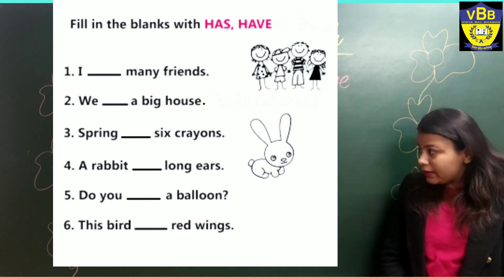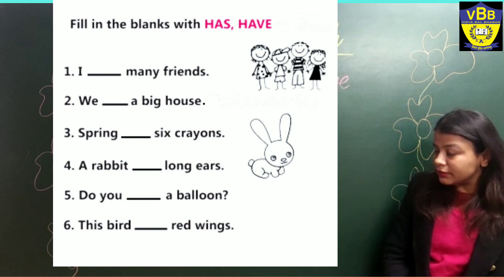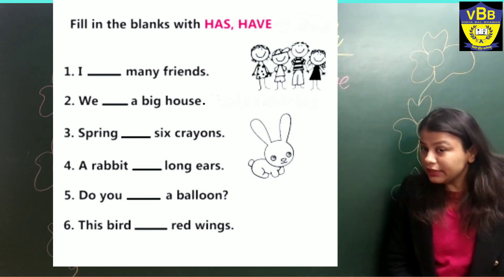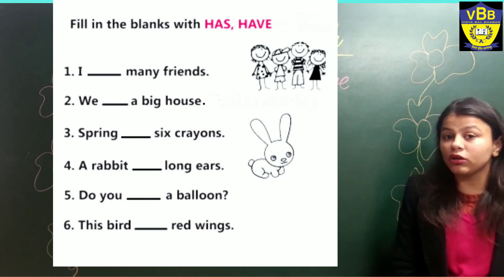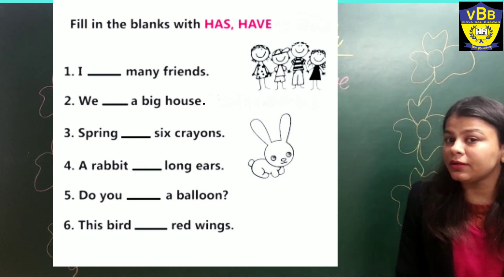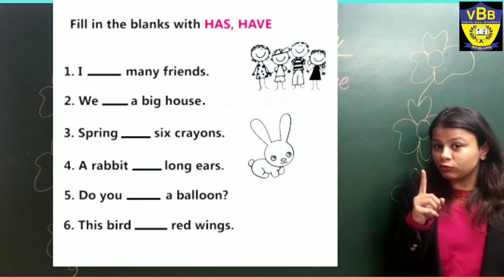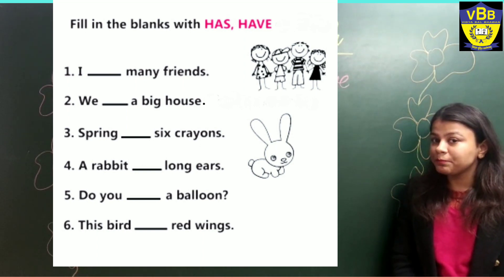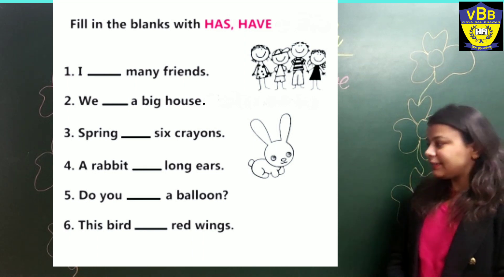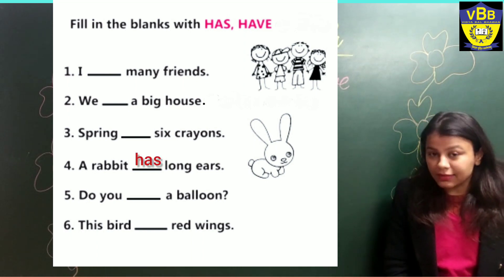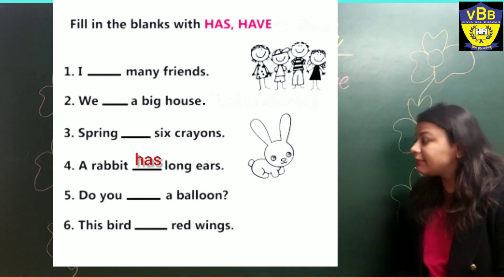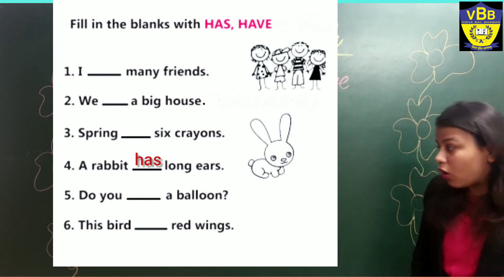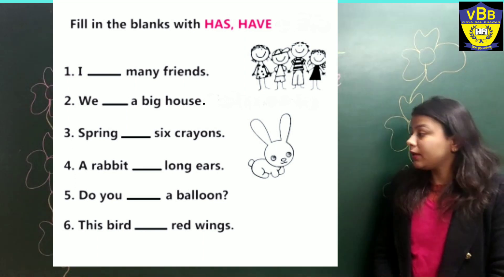A rabbit dash long ears. Here we are talking about only one rabbit, so what will we use? The correct answer is has. A rabbit has long ears.